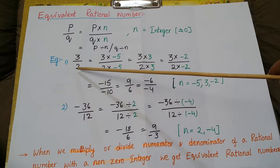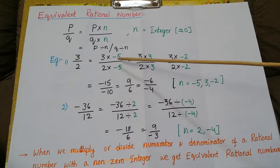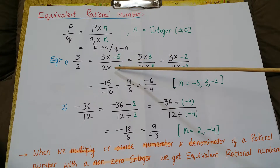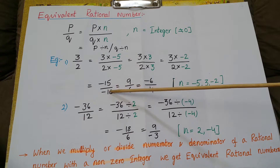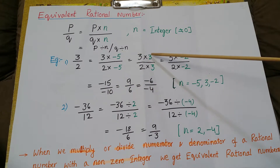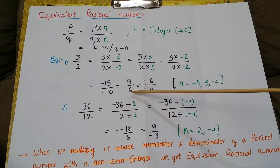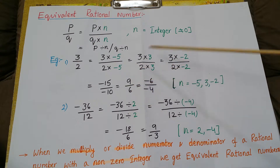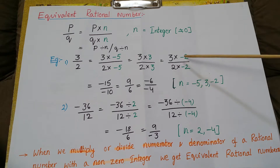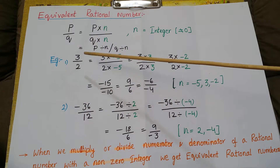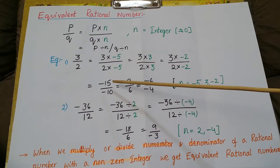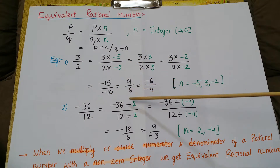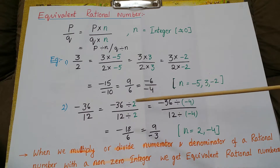See here: P by Q is a rational number; we are multiplying P by Q with the same integer N, or dividing by N. For example, if you take 3 by 2, multiplying both numerator and denominator by minus 5 gives minus 15 by minus 10. Multiplying by 3 gives 9 by 6. Multiplying by minus 2 gives minus 6 by minus 4. So the equivalent rational numbers for 3 by 2 are minus 15 by minus 10, 9 by 6, and minus 6 by minus 4.